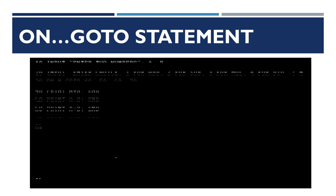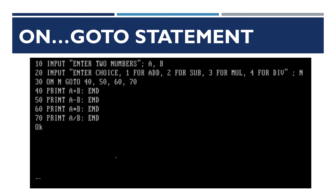Let's check out an example of the ON GOTO statement in GW BASIC. The program asks to enter two numbers A and B, then enter a choice: 1 for add, 2 for subtract, 3 for multiplication, and 4 for division. The choice is stored in variable N. In line 30, the ON GOTO statement is written as: ON N GOTO 40, 50, 60, 70. This means if N equals 1, control goes to line 40; if N equals 2, control moves to line 50.